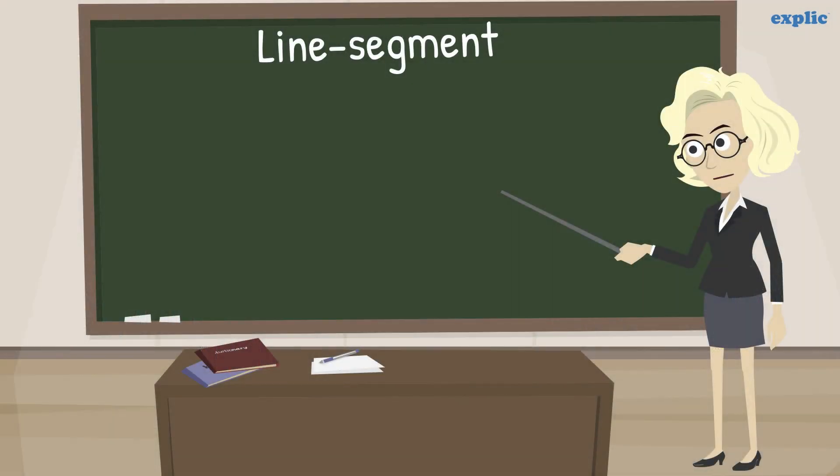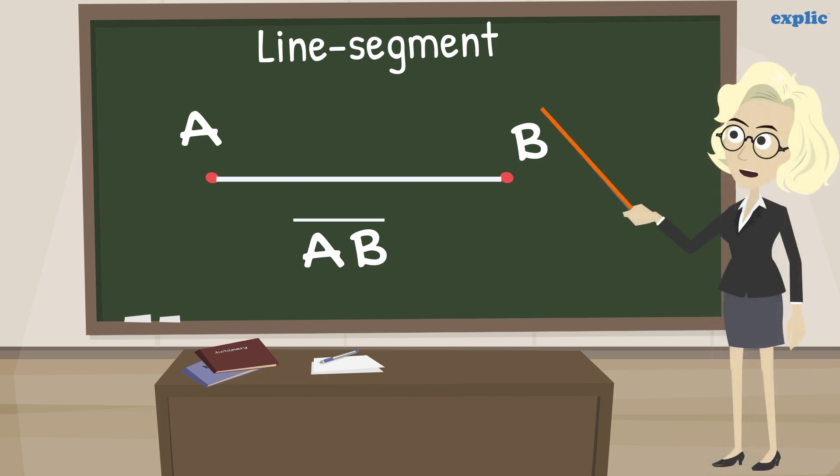If you make two points and join them, it will become a line segment. To write the name of a line segment, write the name of the points together with a bar on the top. The stick I am holding is an example of the line segment.